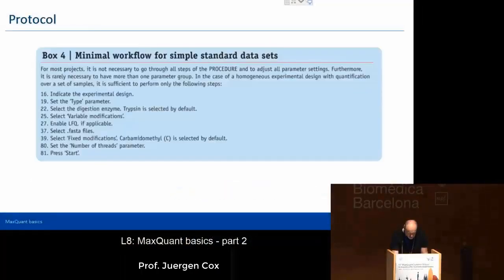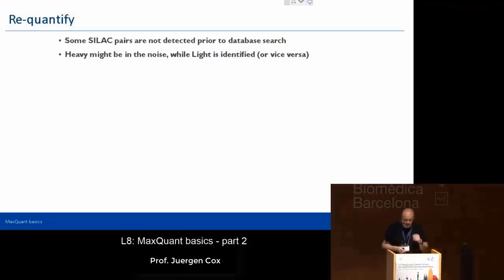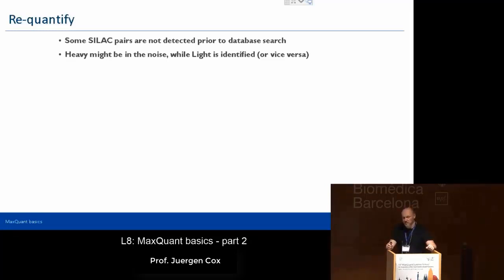Let's start where we ended in the first session. We had already a question about ReQuantify, but not the slide yet. So let's start there. This is for the case where we have MS1 level labeling, for example SILAC labeling. We have cases where we nicely put together light and heavy, or light, medium, heavy features into pairs or triplets. But then we have other cases where we don't manage to do that, but still want to calculate the ratio — and that's where ReQuantify comes in.